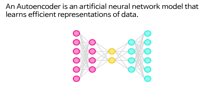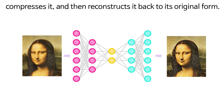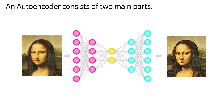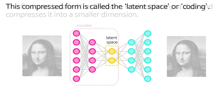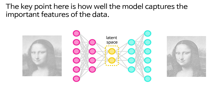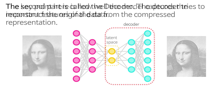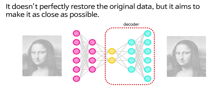An autoencoder is an artificial neural network model that learns efficient representations of data. It extracts important features from the data, compresses it, and then reconstructs it back to its original form. An autoencoder consists of two main parts. The first part, the encoder, takes the input data and compresses it into a smaller dimension. This compressed form is called the latent space or coding. The key point is how well the model captures the important features of the data. The second part, the decoder, tries to reconstruct the original data from the compressed representation. It doesn't perfectly restore the original data, but it aims to make it as close as possible.